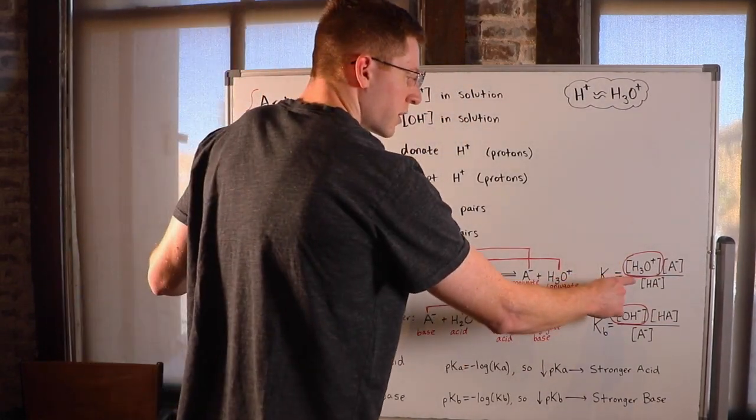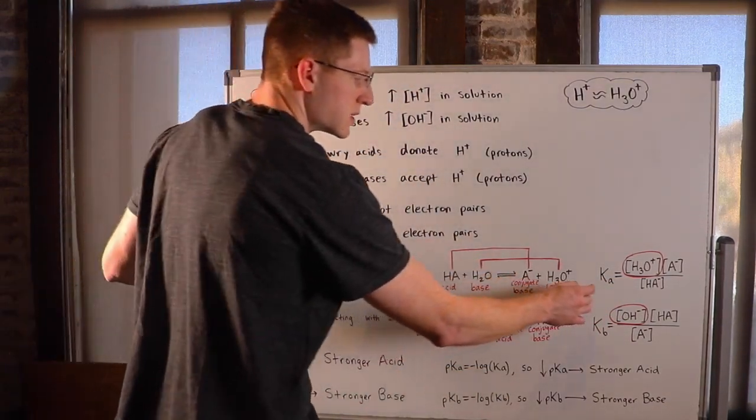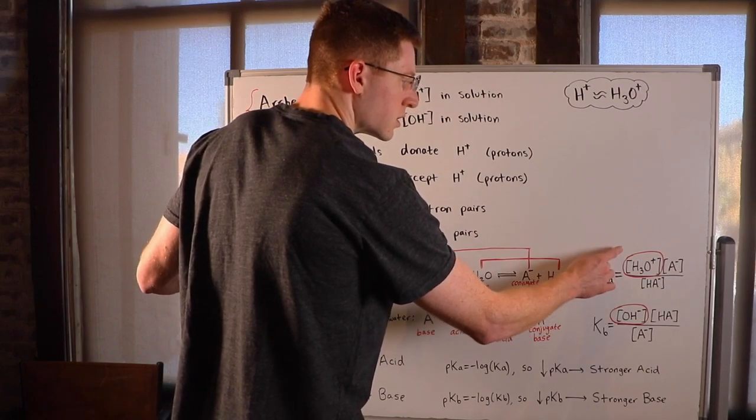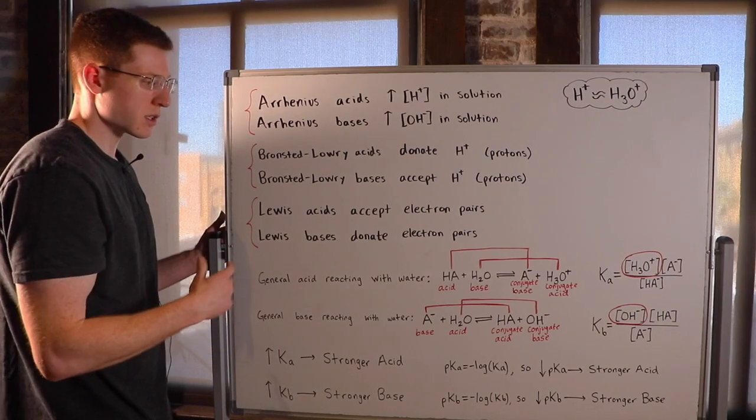So H3O+ contributes to the lowering of the pH, or the strength of an acid. We say the bigger the Ka, the stronger the acid, the more H3O+ it is going to donate in solution.